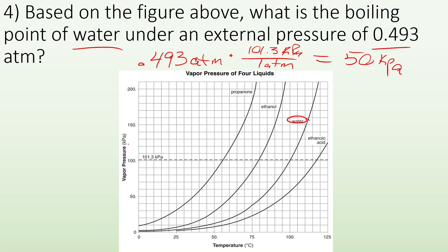So 50 kilopascals is on this line right here. I want the boiling point of water at that pressure, so I follow that line over — it hits about here — follow that line down, and I get roughly 83 degrees Celsius.